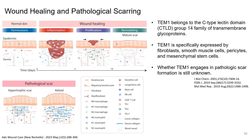So the molecule we are interested in is Thiamin, which belongs to the cysteine-rich domain group protein family. It is a transmembrane glycoprotein, and Thiamin is specifically expressed by fibroblasts, lumbar cell pericytes, and mesenchymal stem cells. Whether Thiamin engages in pathological scar formation is still unknown.